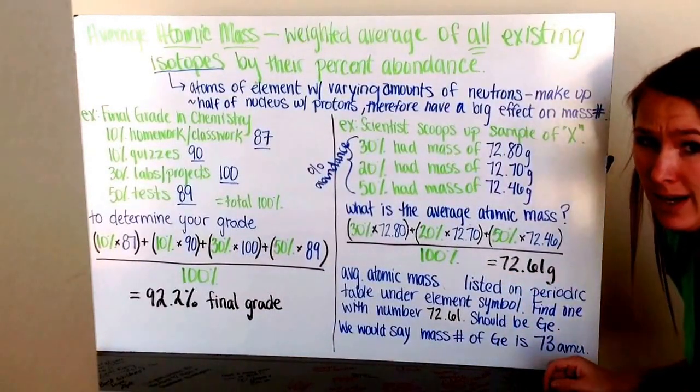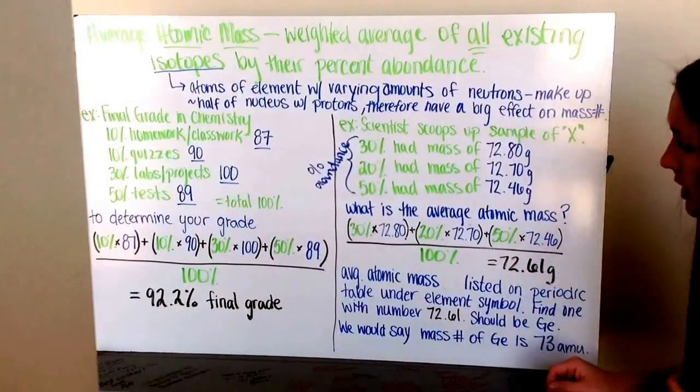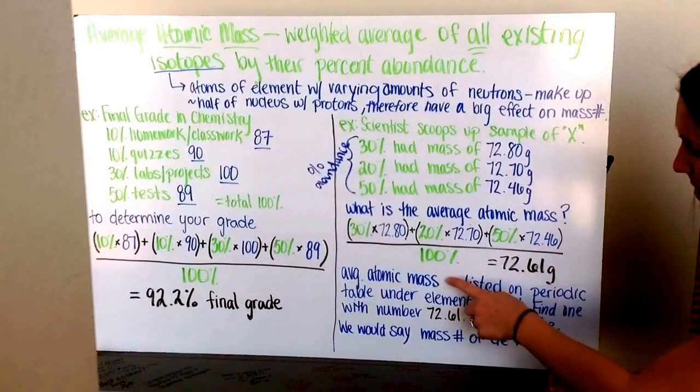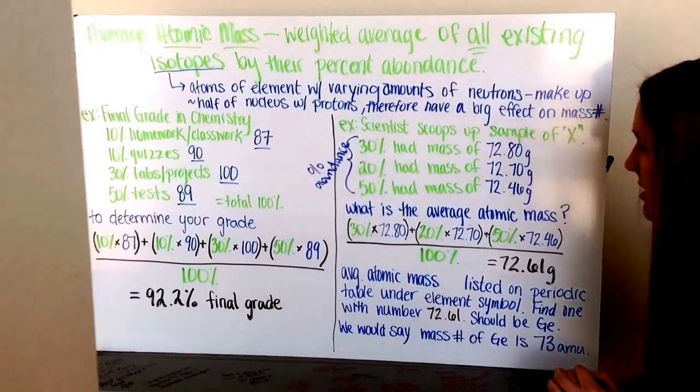Either method works as long as you get 72.61 grams. This is the average atomic mass, and you can look on the periodic table to see which element this matches.